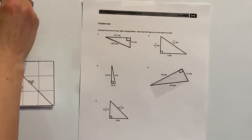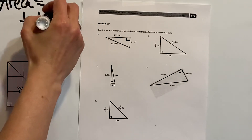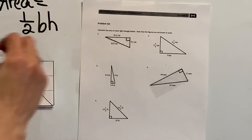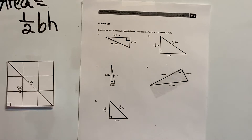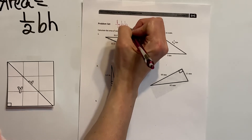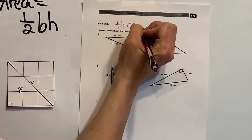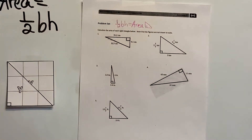To find the area, we found that we need half base times height. The area of a right triangle is half base times height — it's half because it's exactly half of the square. So our formula is: half base times height equals area of the right triangle.